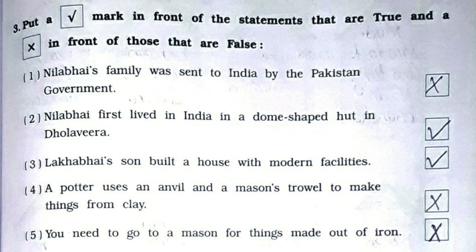Now true or false. First: Neela Bhai's family was sent to India by the Pakistan government — it is false. Second: Neela Bhai first lived in India in a dome-shaped hut in Dolavira — it is true. Third: Lakha Bhai's son built a house with modern facilities — it is true. Fourth: A potter uses an anvil and a mason uses a trowel to make things from clay — it is false. Fifth: You need to go to a mason for things made out of iron — it is false.